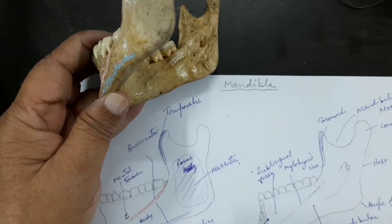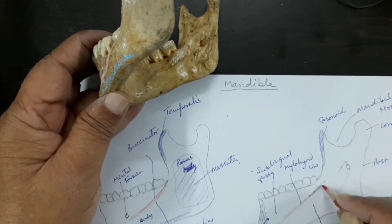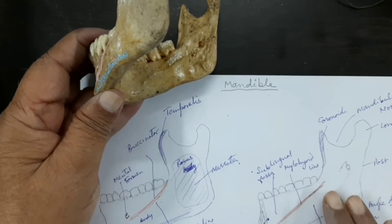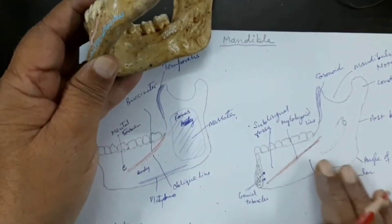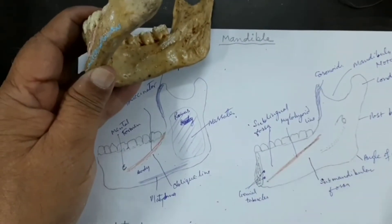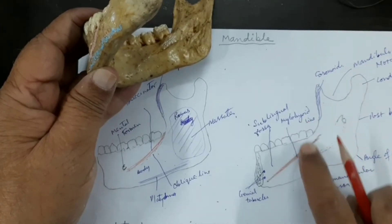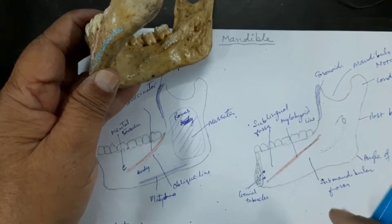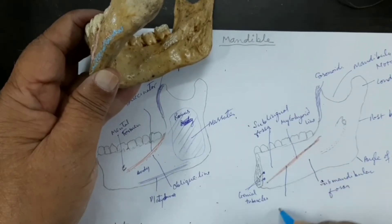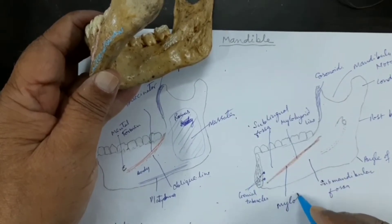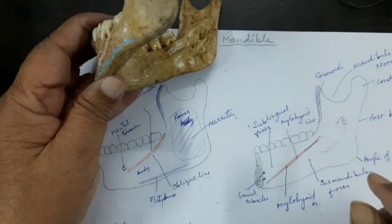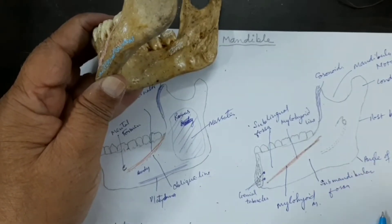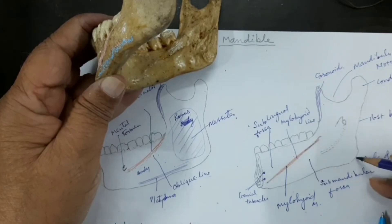On the internal or medial surface, I will draw the origin on the mylohyoid line. This is the mylohyoid line, and the muscle attached here is the mylohyoid muscle. So this is the origin of the mylohyoid muscle.